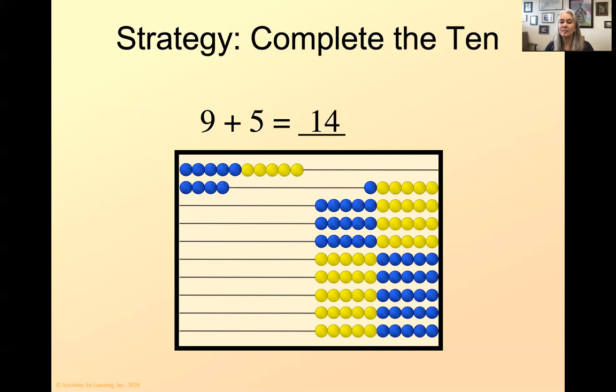Let's do another one. Nine plus seven. I've got nine in the first row, seven on the next. Complete the 10. One, two, three, trade. Answer is 10, six, or 16.